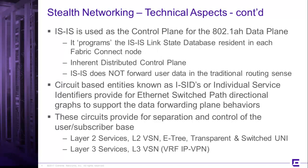We use ISIS as the control plane for 802.1AH. When people hear ISIS, they often think about it in the traditional routing sense — but it does not behave that way here. We don't move any user data in the traditional routing sense. Instead, ISIS is used to program the link state databases that are resident in each FabriConnect node, leading to a very scalable, inherently distributed control plane for the fabric.